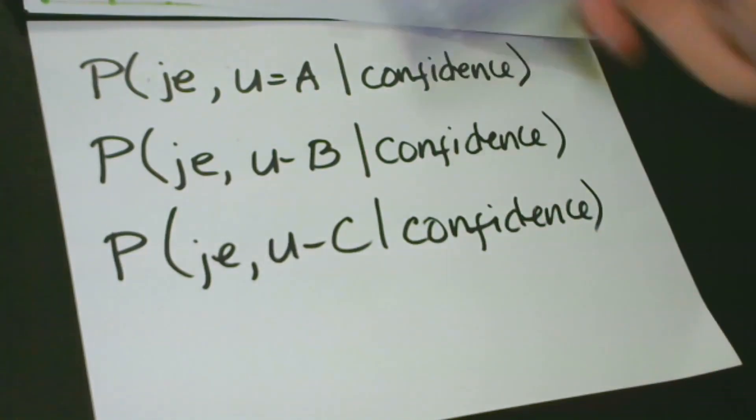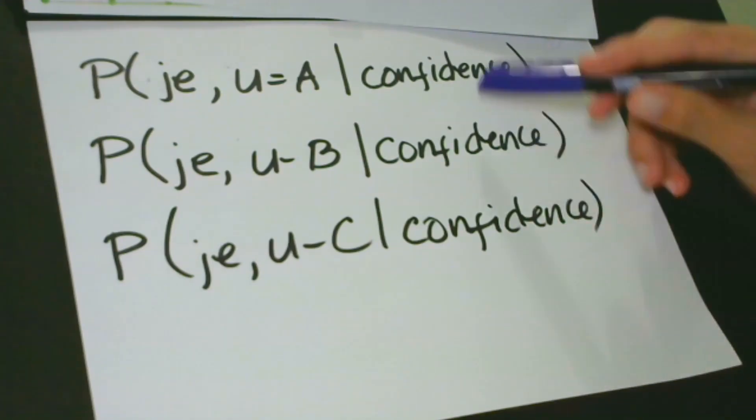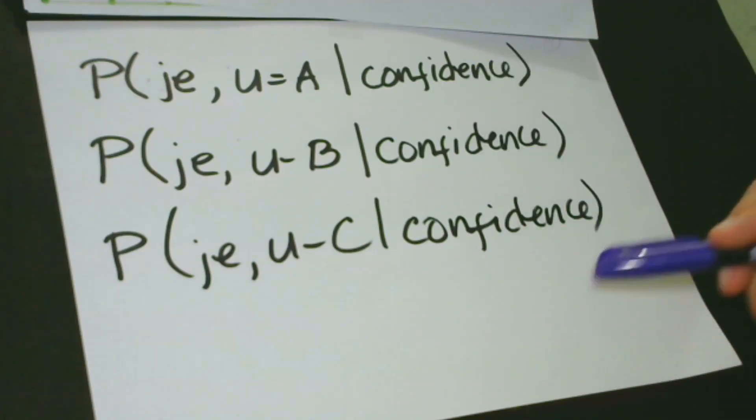What is the meaning of this? This kind of method is called integrating out the nuisance variable. In this case, the nuisance variable is university.